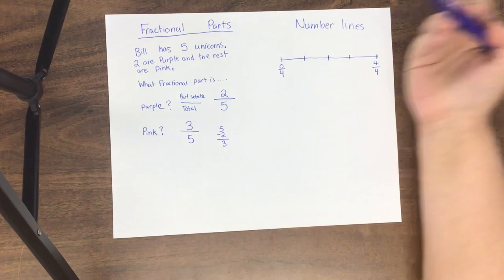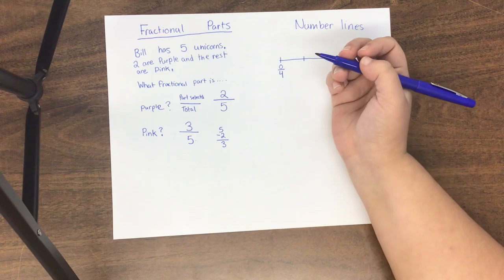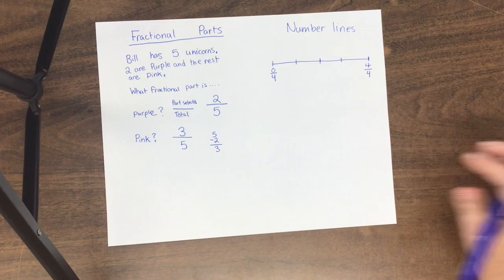Three out of five unicorns are pink, just like that. So the bottom number is the total amount. The top number is the amount that are the specific thing. In this case, purple or pink. In your question, it might be something different, but that's basically how you do it.